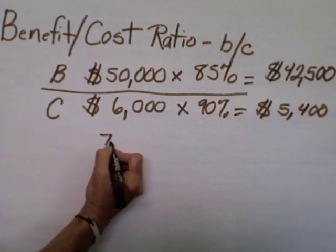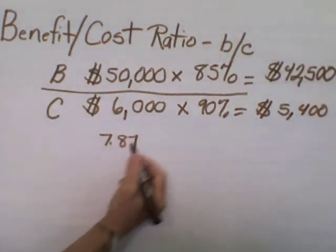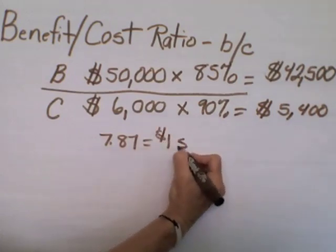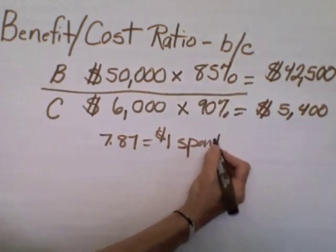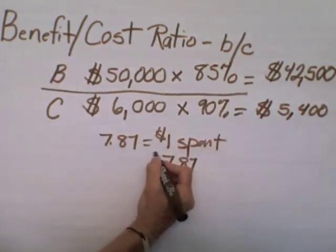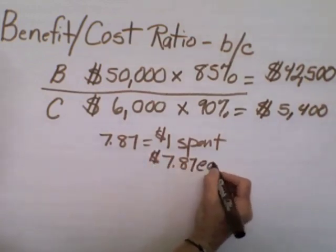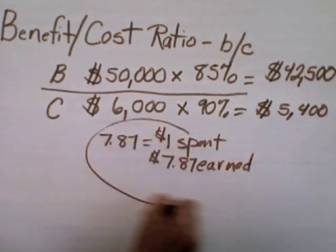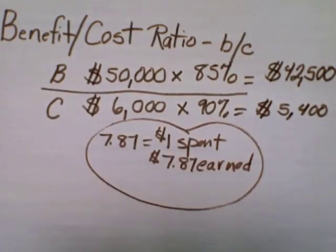Now when we divide the expected value of the revenue, $42,500, by the expected value of the cost, $5,400, the resulting benefit cost ratio is 7.87, which means that for every dollar that we spend on this project or this idea, we estimate that we'll earn $7.87. That's a terrific return.